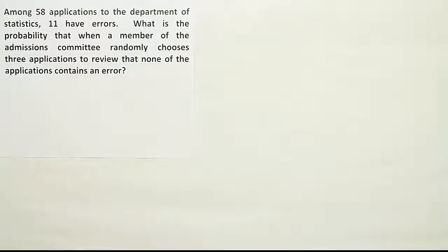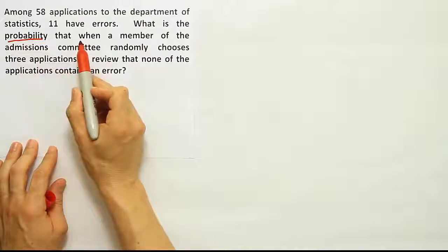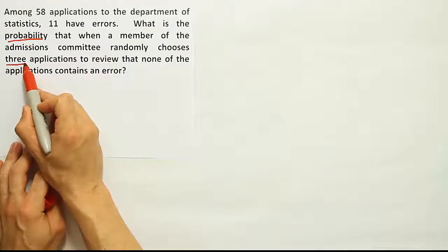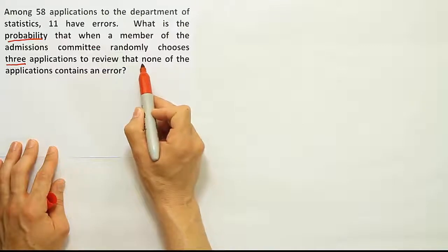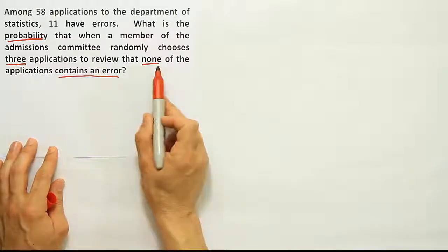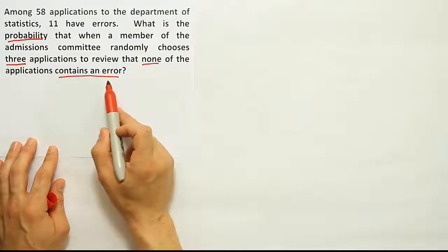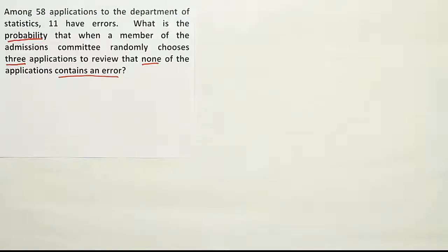When I read this problem, I recognize that it's multiplication rule of probability. It's a probability question where they're taking more than one application, so that's a good sign it might be multiplication rule. They say none of the applications contains an error, so they're all behaving the same way. There's more than one application being selected, and they're all behaving the same way. It's almost certainly multiplication rule of probability.